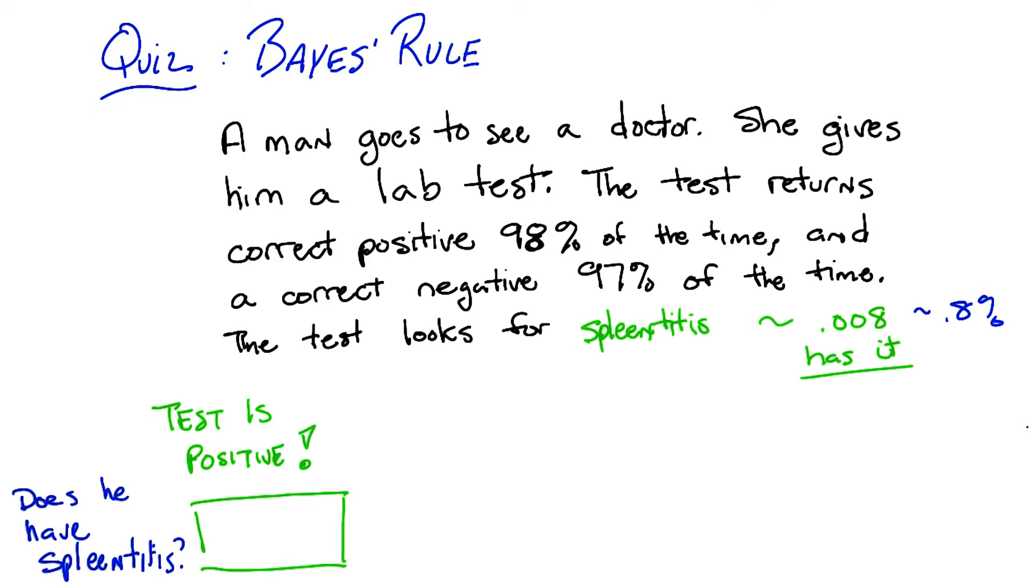Well, I mean, it's a noisy and probabilistic world, right? So the test told us that things look like he has spleen titus, and the test is usually right. But the test is sometimes wrong, and it can give the wrong answer. And that's really all we know, so we can't be sure.